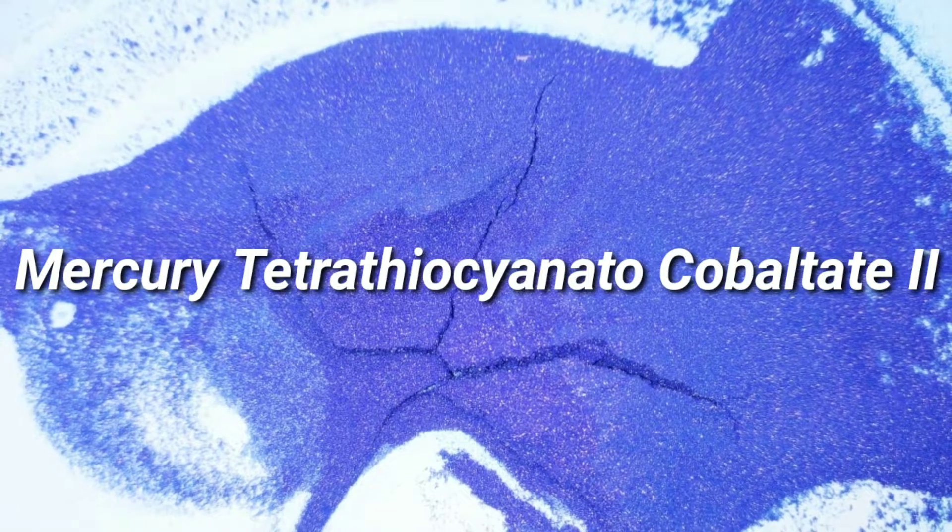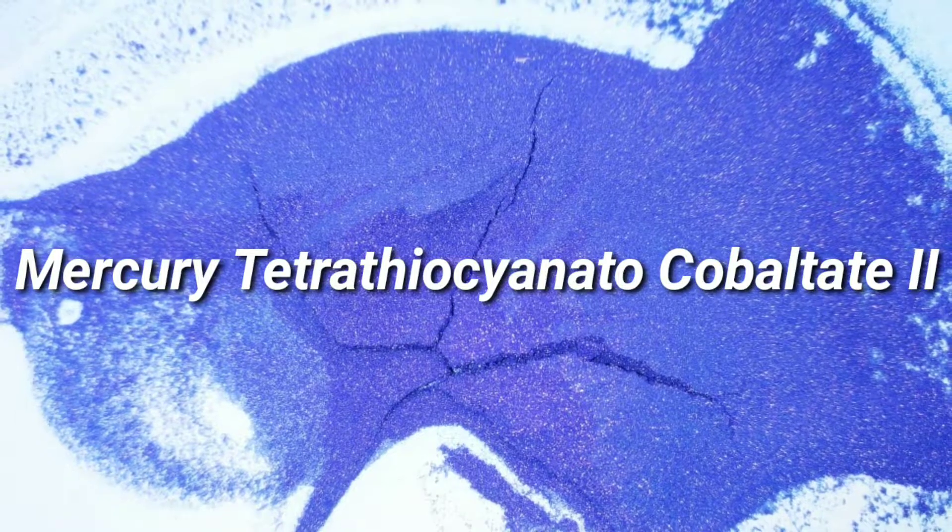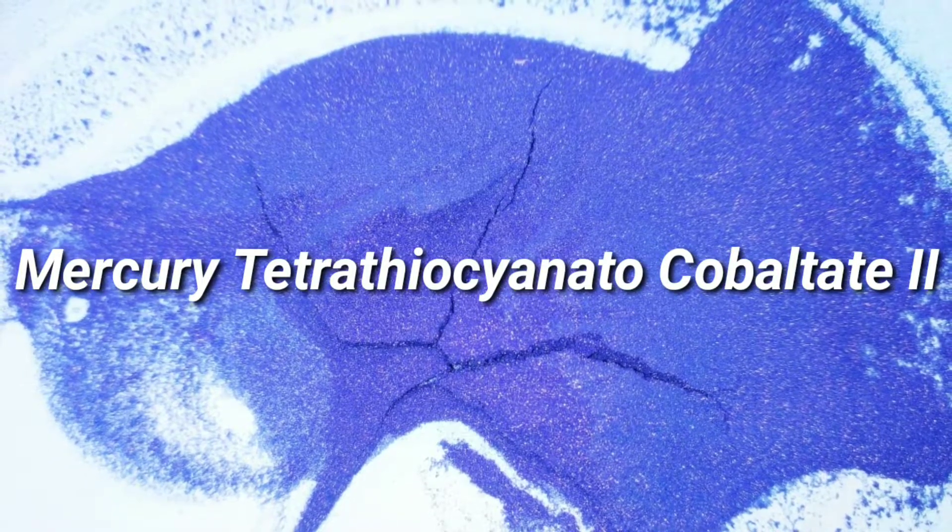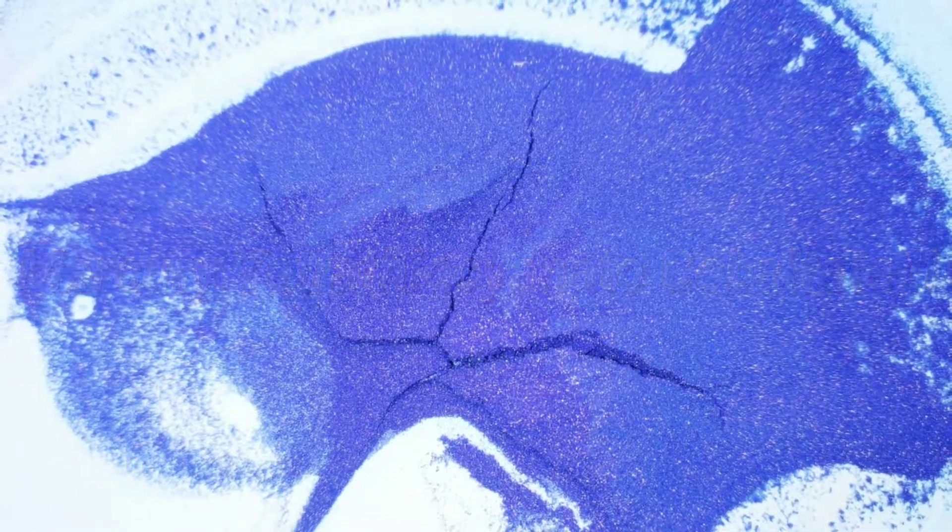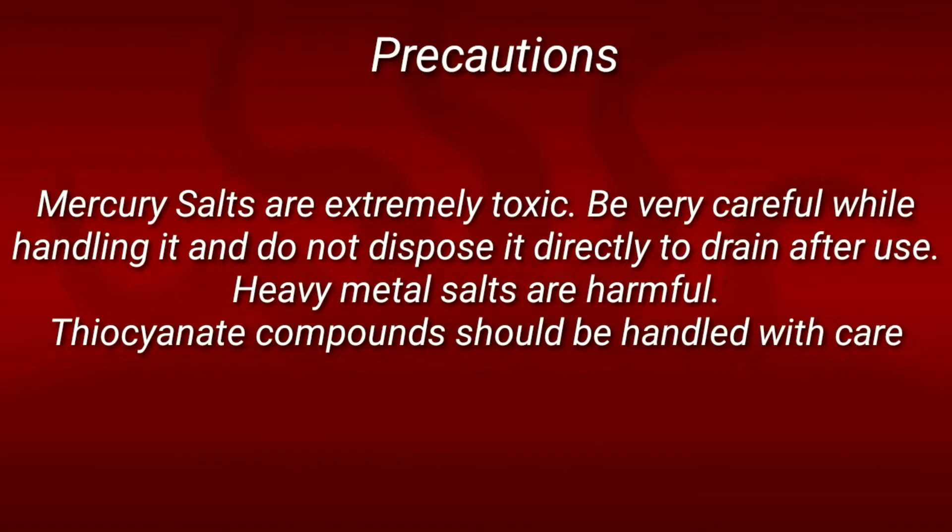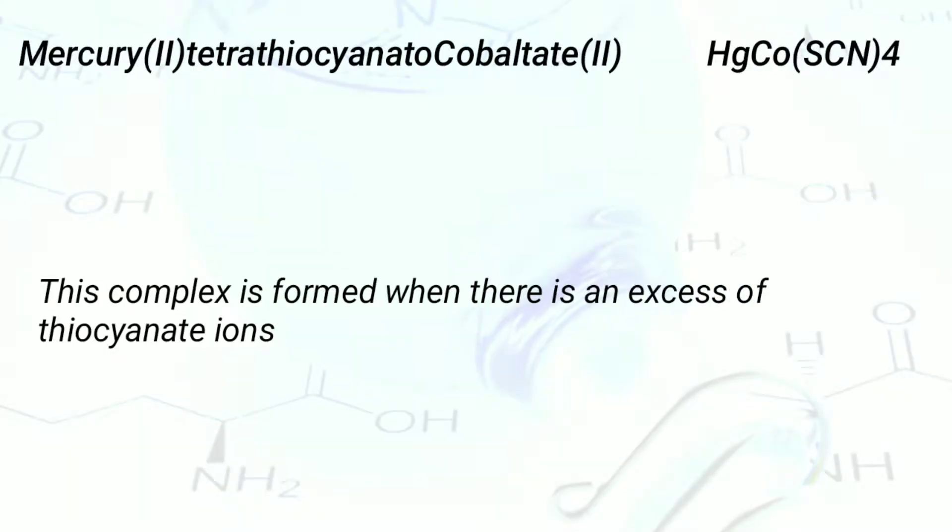Hello friends, in this video we will make the complex mercury(II) tetrathiocyanatocobaltate(II). Mercury(II) tetrathiocyanatocobaltate(II) is actually a coordination compound. It has the complex ion of 4-thiocyanate called tetrathiocyanate, which is formed when there is an excess of thiocyanate ion. We will see how it is formed in the video.